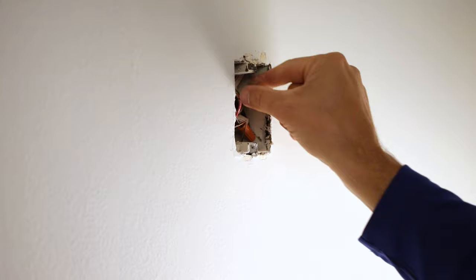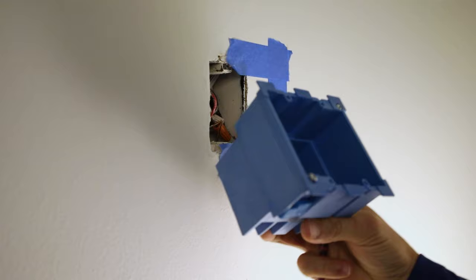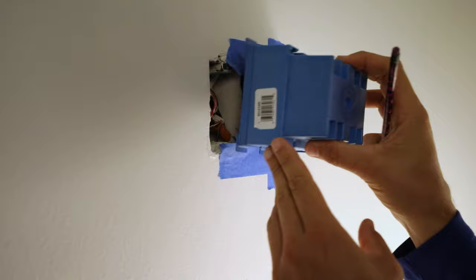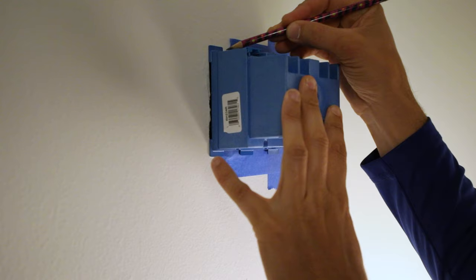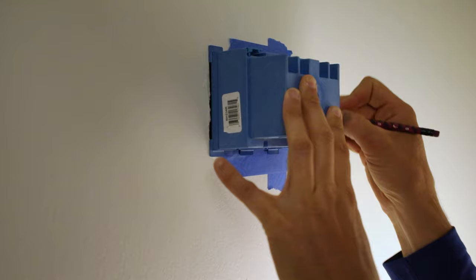So what I did is put some tape on the wall. I take an old work double gang box, and then I flip it upside down, and basically I want to trace the remaining space on the wall. So I cover the hole, make sure it's nice and level, and then I want to draw the rest of the box over my tape. This is going to give me an outline of where to cut the new box in.